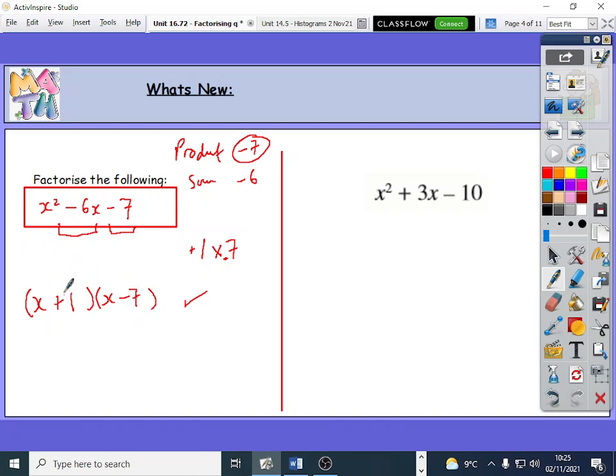If I expand the brackets, can you all pay attention please? x times x you will get x squared, x times minus 7 you get minus 7x, 1 times x is 1x, it's just x, and 1 times minus 7 is going to give me minus 7.